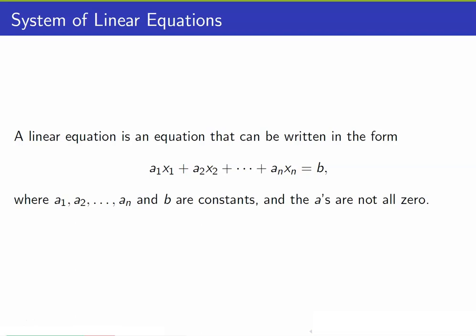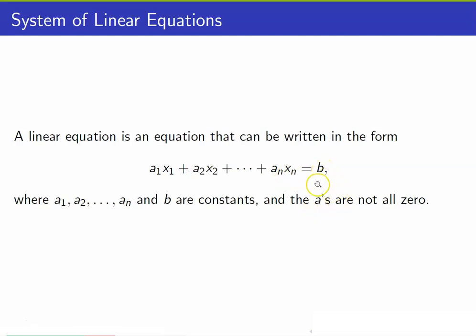First, let us talk about the definition of a linear equation. It is simply an equation that can be written in this form: a1 times x1 plus a2 times x2, and so on until an times xn, is equal to a constant b. Take note that a1, a2, up to an are just constants, and so is b. And the a's here are not all equal to 0.